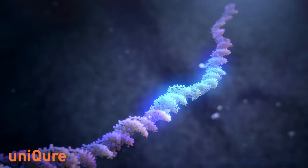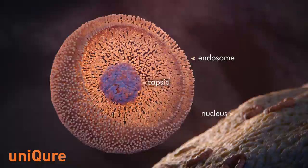A protein shell, called a capsid, encases the genetic material and helps target delivery to certain cells.